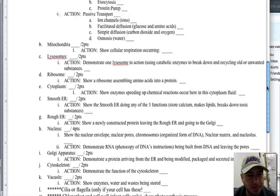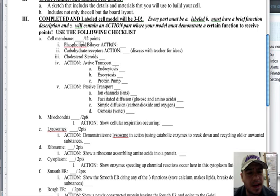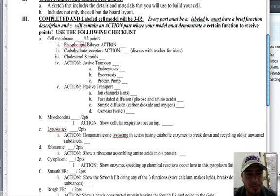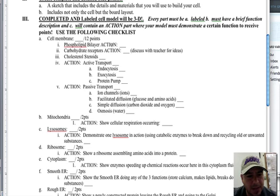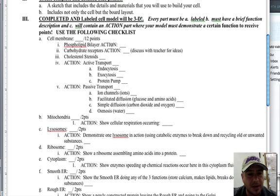Let's go through those. For the cell membrane, you need to have the phospholipid bilayer. Remember, the bilayer acts as a barrier and blocks certain things. When you build your phospholipid bilayer on the cell membrane section — which is on the bottom part — you want to show certain things trying to get in but not being allowed to. Maybe charged ions or big items trying to get in but being blocked. That's how you show the action.